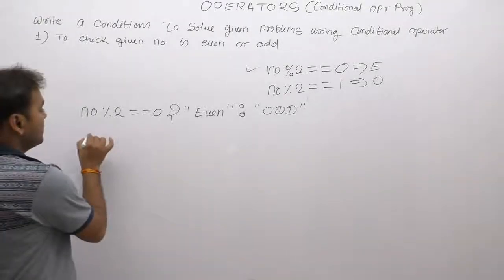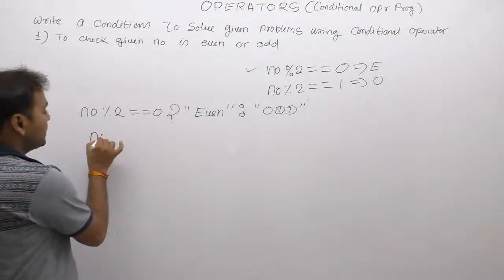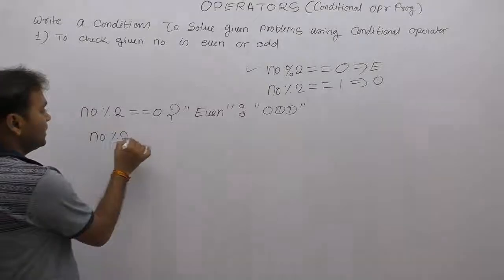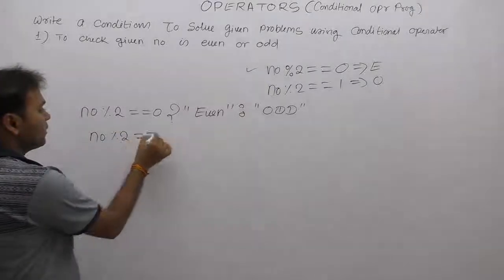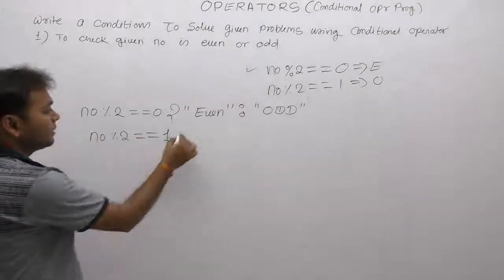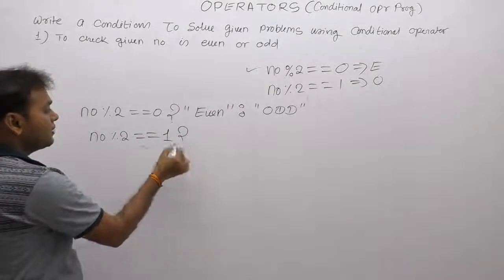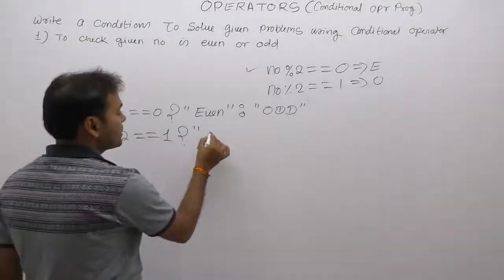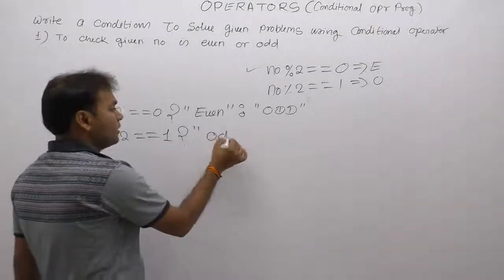Another way, same case: we apply the condition for checking even or odd numbers. If remainder is one, condition can be true — true is the case of the true section. If remainder is one and condition is true, display odd.